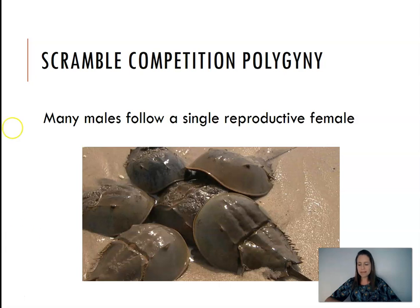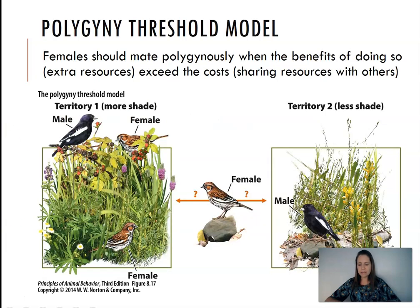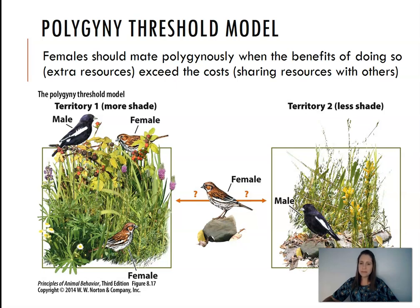Those are the basic types of polygamy, and we see examples of all of those across all the different taxa. It's not like we see one for mammals, one for invertebrates like crabs, and one for birds. We see examples of all those models of polygamy across a variety of different animals. In all cases we see variation in male reproductive success, but males will mate multiply with different females — one male, many females.